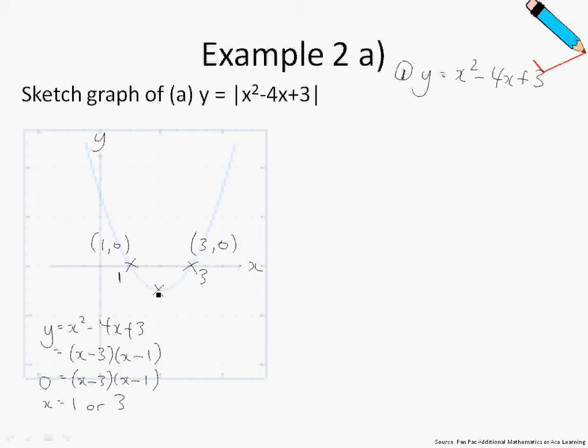To find the minimum point over here, all you need to do is to take the midpoint between the x coordinate of 1 and the x coordinate of 3, and this gives me 2. So over here the x coordinate will be 2 and the y coordinate, you just need to substitute 2 into the function.